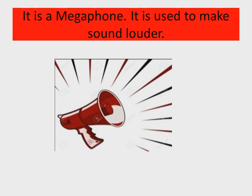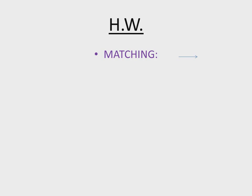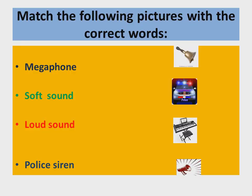Now, today your homework: I will show you on the next screen. As I discussed with you, there are four pictures — the megaphone, the police siren, the bell, and the piano. Your homework will be to match the correct word with the correct picture. I will give you one worksheet with the same work.